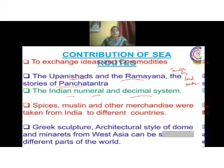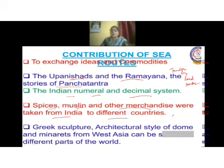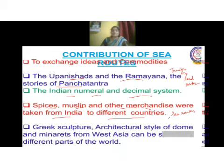Through sea routes, spices, muslin, and other merchandise were taken from India to different countries. As sea routes developed, these commodities from the past were transported and traded across the world.